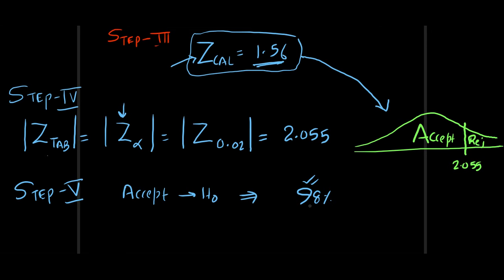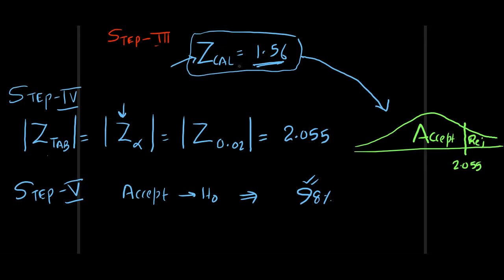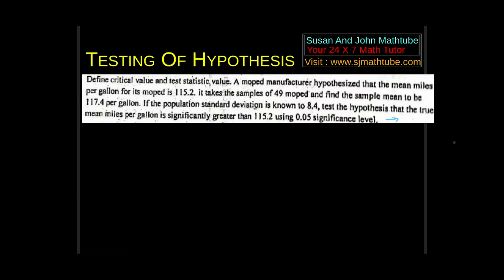I hope you understood the process. Let's do more problems. This was a past paper question. Define critical value and test statistic value: the test statistic is what you calculate, and the critical value is the tabulated value that decides the acceptance and rejection regions.